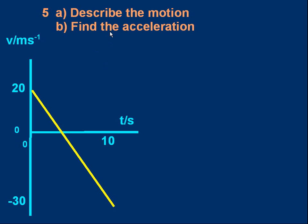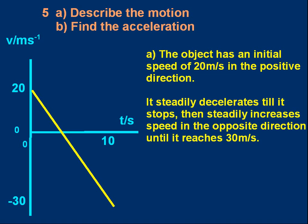Let's go through these. For 5a, there's no one correct answer. So here's one possible answer. You could say the object has an initial speed of 20 meters per second in the positive direction. That gives you your starting point. It steadily decelerates. It slows down. You can see that it stops. At that point it's stationary. It should probably say momentarily stops, or has an instantaneous velocity of zero. So it doesn't stay stopped. Then it steadily increases speed in the opposite direction, which you can see here until it reaches 30 meters per second. And that's in the opposite direction to the way it started. That's one way to say it. There are many ways to explain what's happened. How the object has moved.